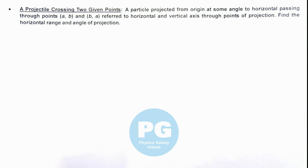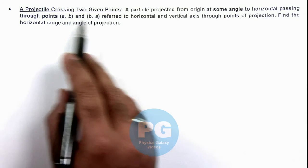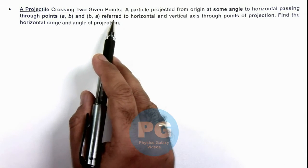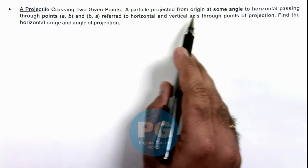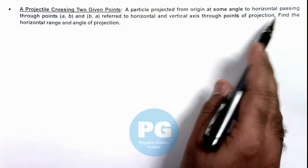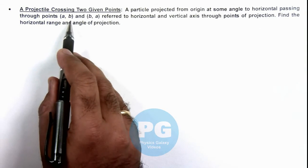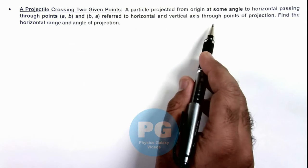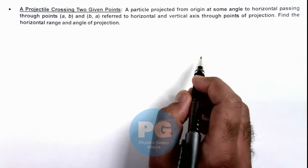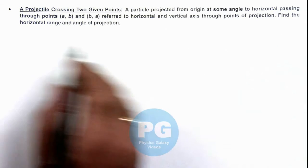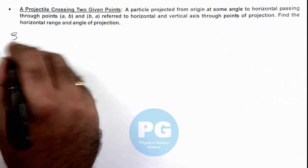In this illustration we'll analyze a projectile crossing two given points. We are given that a particle projected from origin at some angle to horizontal passes through points (a,b) and (b,a), referred to horizontal and vertical axis through point of projection. We are required to find the horizontal range and angle of projection in this situation.